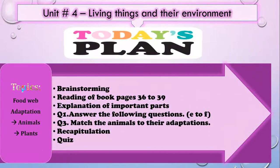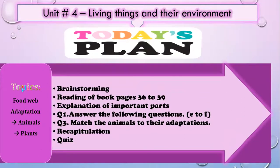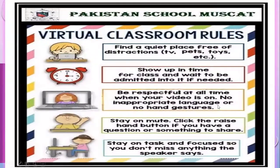Today's plan is to read about the topic of adaptations in animals and plants. First we'll do some brainstorming, then reading of book pages 36 to 39. We'll explain some important parts of the lesson, then do notebook work: question one, answer the following questions from E to F; question two, match the animals to their adaptations on book page 41. Then recap and a quiz. Don't forget to follow the rules — rules will help you to be focused.